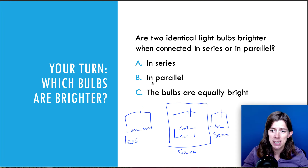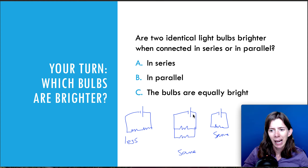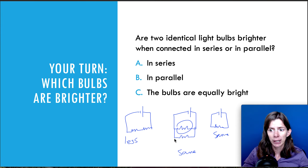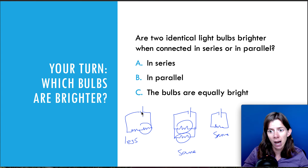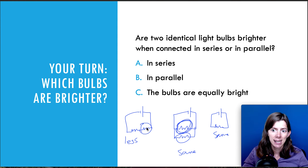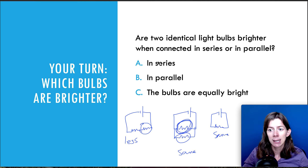If you hadn't answered those two questions, you can think about it this way: the parallel bulbs are getting the same current and the same voltage as the single bulb, with the same resistance. But in series, you have to share the voltage from the battery. So if you look at one individual resistor, it's not getting the full 12 volts. Since it has less voltage but the same resistance, the current through it is going to be less than the ones in parallel. So the ones in parallel are going to be more bright.